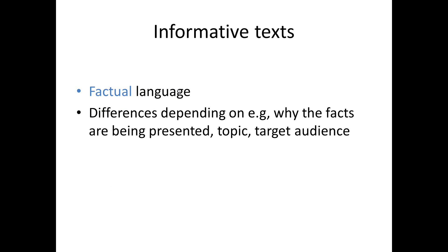Informative texts typically employ what we call factual language. In an informative text, the intention of the writer is to present a set of facts or explain how something is done. But because there are many different sub-types of informative texts, there are obviously also differences in the language and structures found in them. This depends on such factors as why the facts are being presented, the topic, the target audience, and so on.